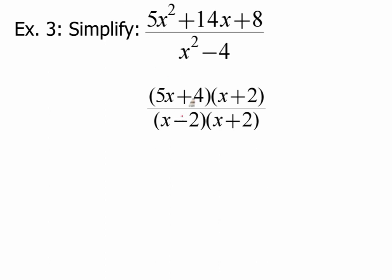So once again, I want to just cancel out what I can. The x plus 2's cancel. 5x plus 4 and x minus 2, those don't cancel out at all. So my answer ends up being 5x plus 4 over x minus 2.